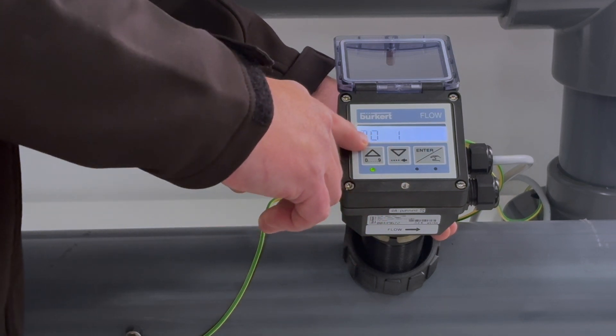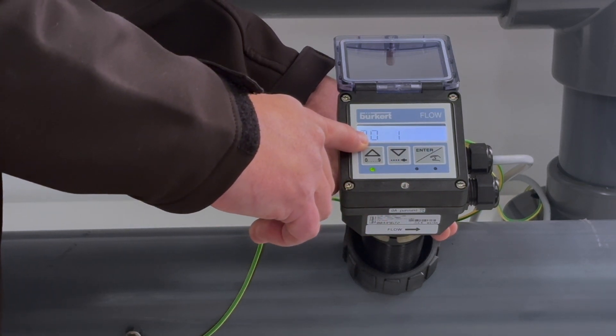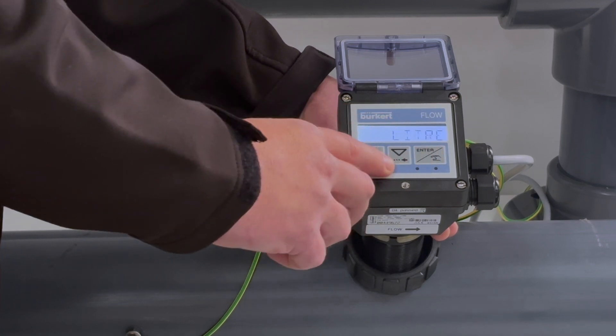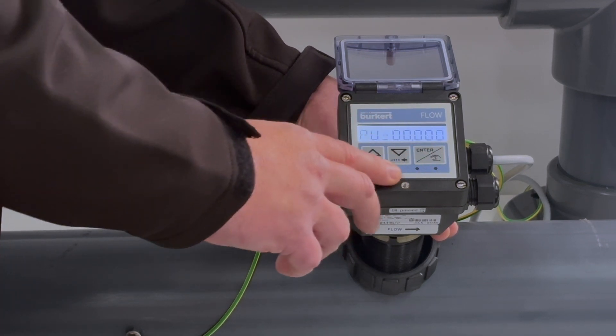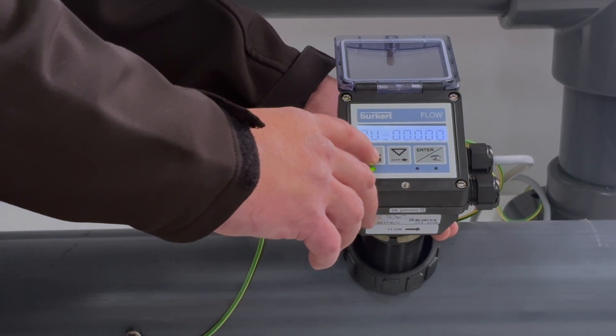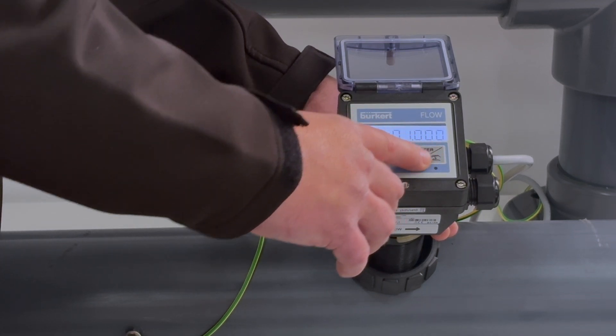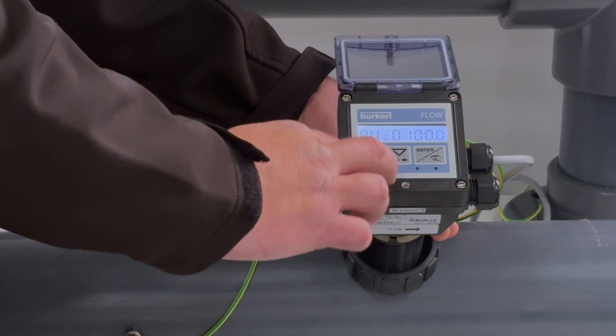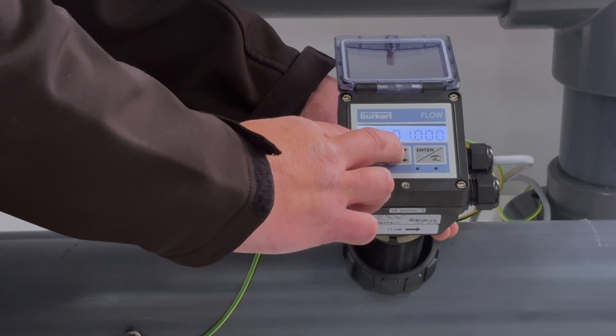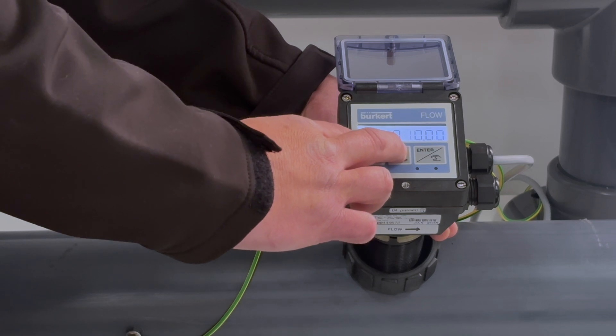I'm then going to set my digital output 1, which is going to be my pulse output. Pulse to pulses per liter, and I'll set this one for one pulse per liter. Again I can change the decimal places by pressing momentarily the up and down buttons to what value I'd like to set it at.